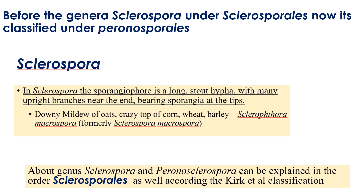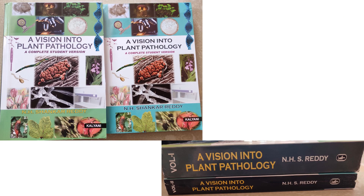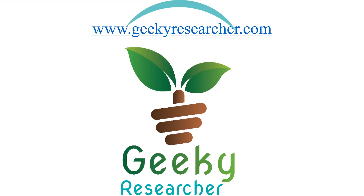Sclerosporales: before, Sclerospora was classified under Sclerosporales, but now it is classified under Peronosporales. I explained this order especially in Sclerosporales in detail according to Cricketal classification. For further information, students can refer to my book 'A Vision into Plant Pathology: A Complete Student Version.' For further doubts, clarifications, and guidance, students can reach us at www.geekyresearcher.com. Stay geeky and stay tuned — we are Team Geeky Researchers.